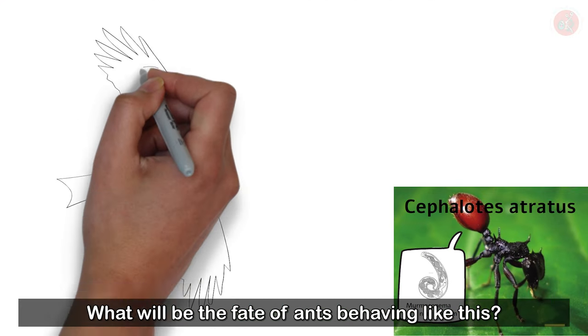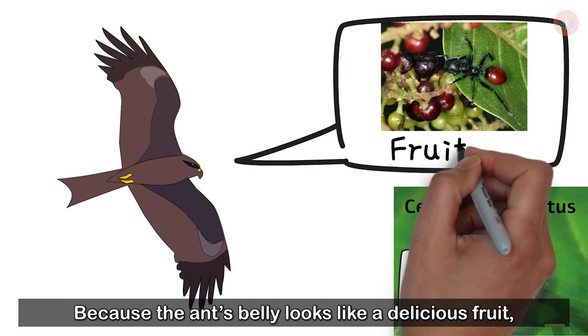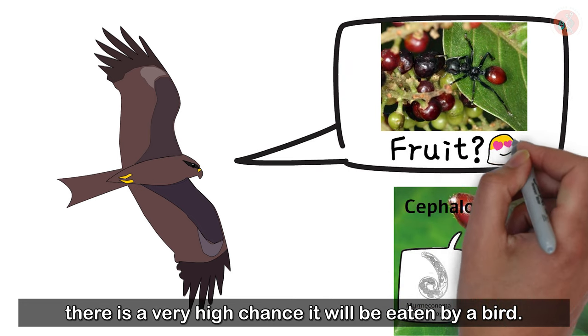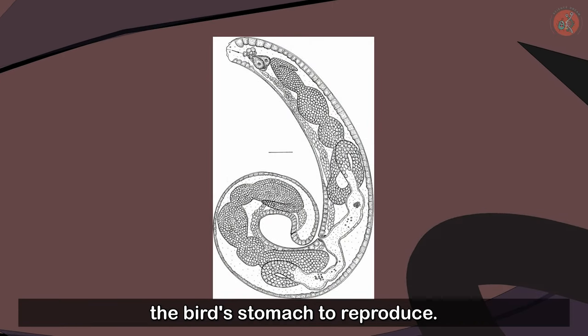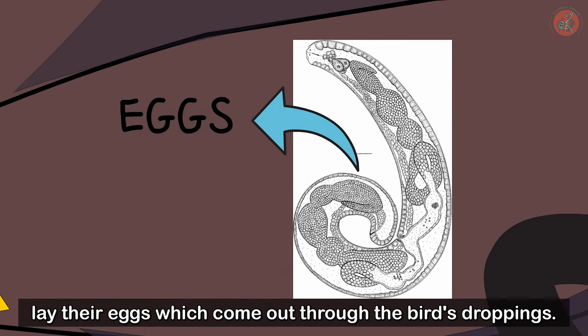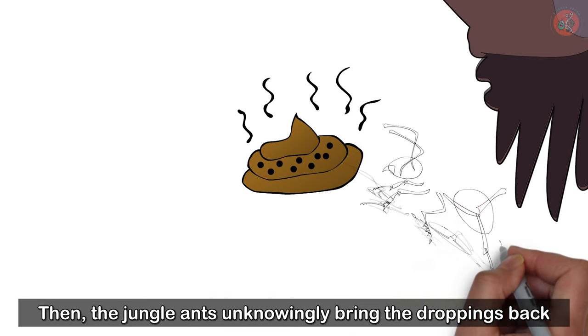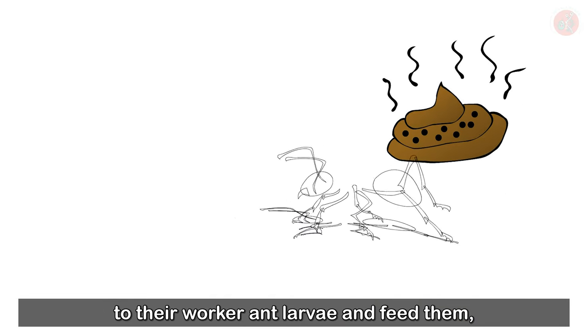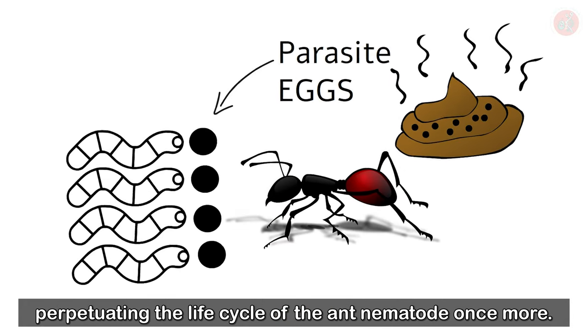What will be the fate of ants behaving like this? Because the ant's belly looks like a delicious fruit, there is a very high chance it will be eaten by a bird. The ant nematode then naturally enters the bird's stomach to reproduce. After reproducing within the bird's body, the ant nematodes lay their eggs which come out through the bird's droppings. Then the jungle ants unknowingly bring the droppings back to their worker ant larvae and feed them, perpetuating the life cycle of the ant nematode once more.